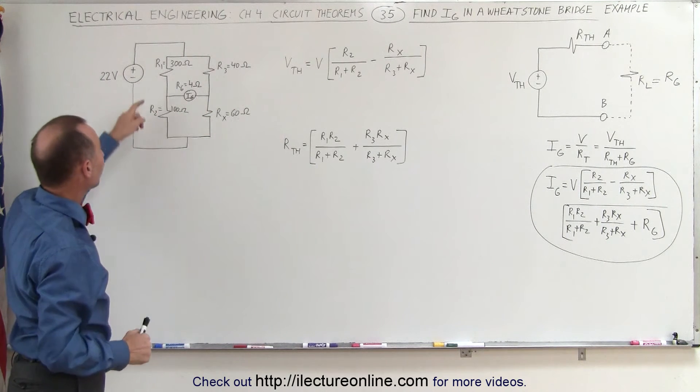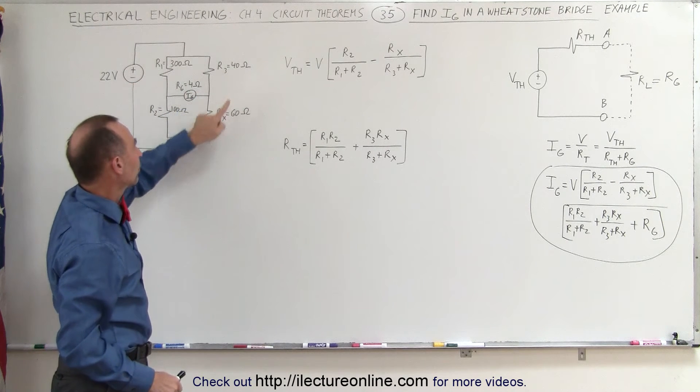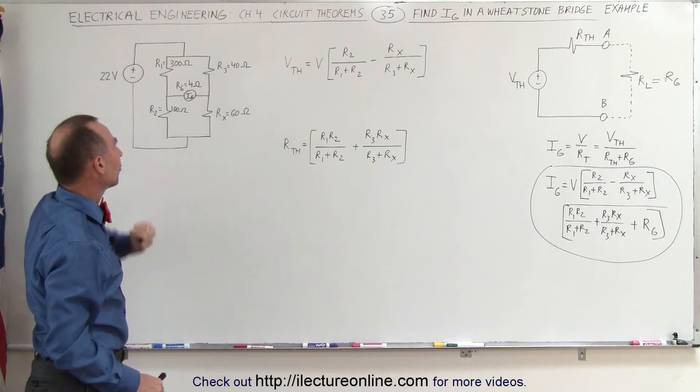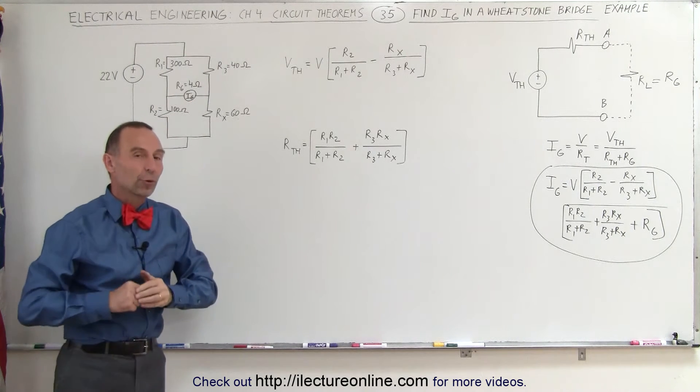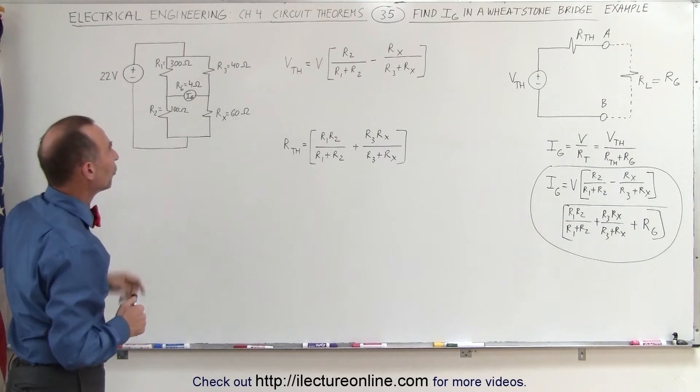And here are some values. R1 is 300 ohms, R2 is 100 ohms, R3 is 40 ohms, and Rx is 60 ohms. The resistance of the galvanometer is assumed to be 4 ohms. The source to the circuit is 22 volts.